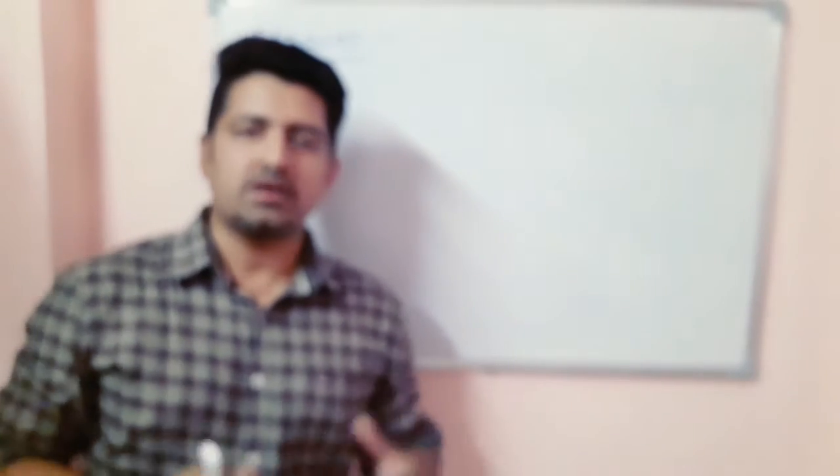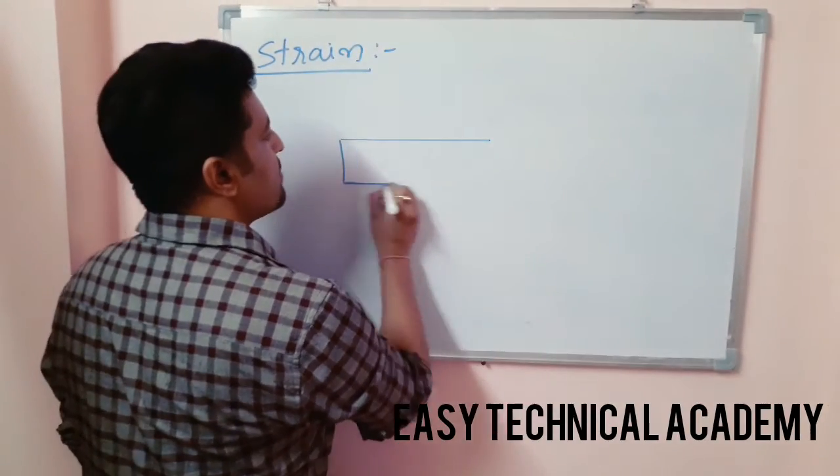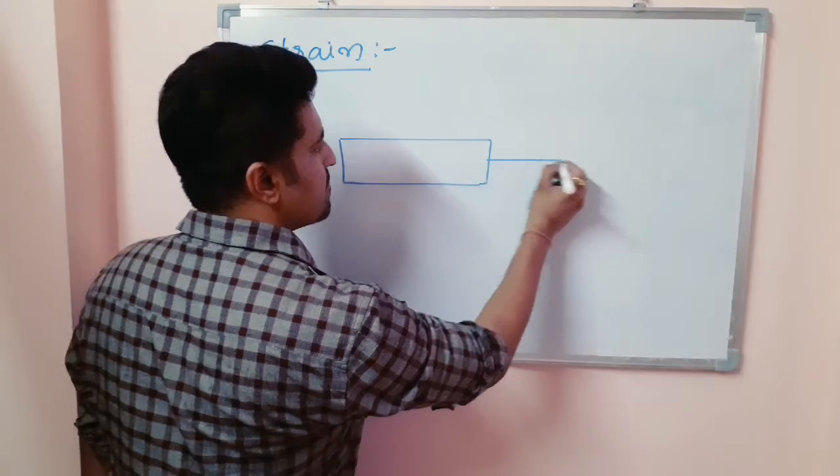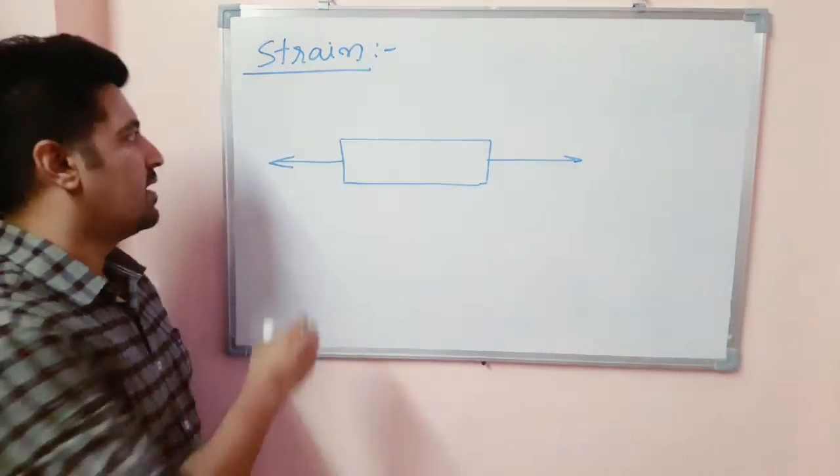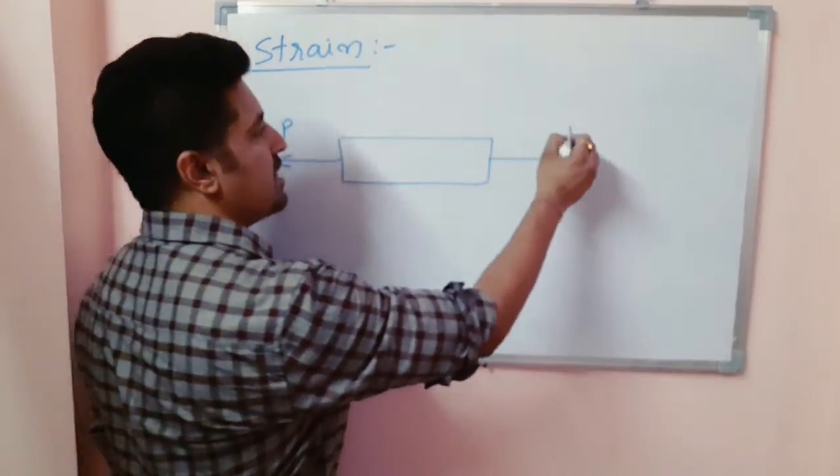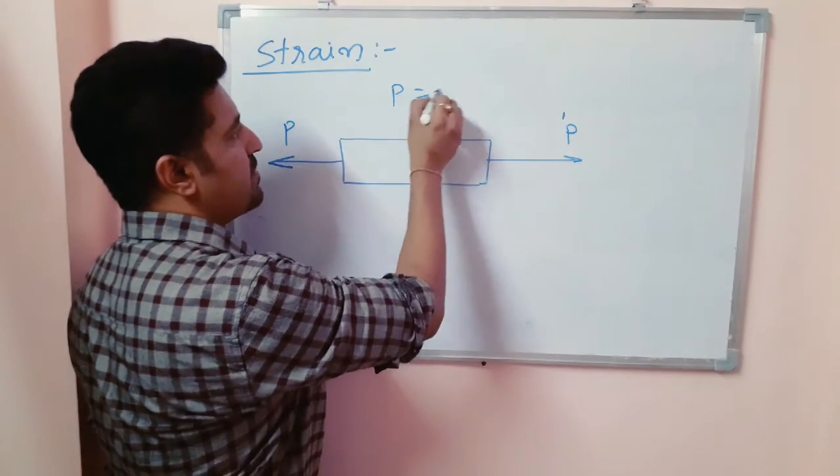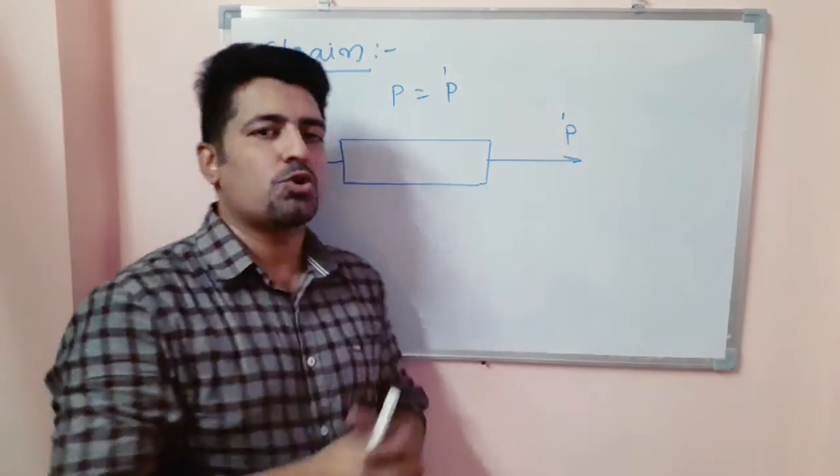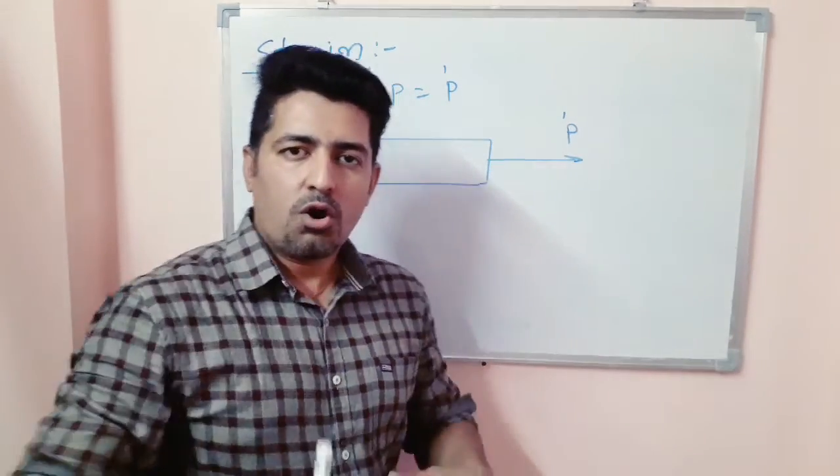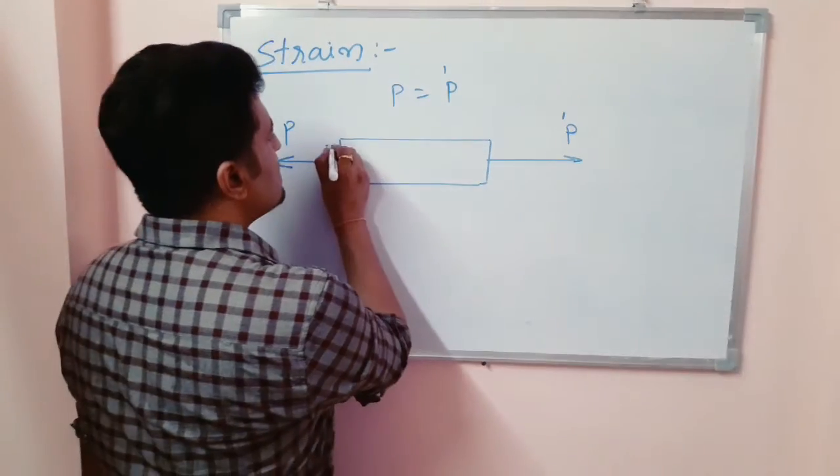Now we will talk about strain. What is strain? When a load is applied on the body, a tensile load is applied on the body, that is P and P dash, where P is equal to P dash. When we put tensile or compressive load on the body, the body deforms.